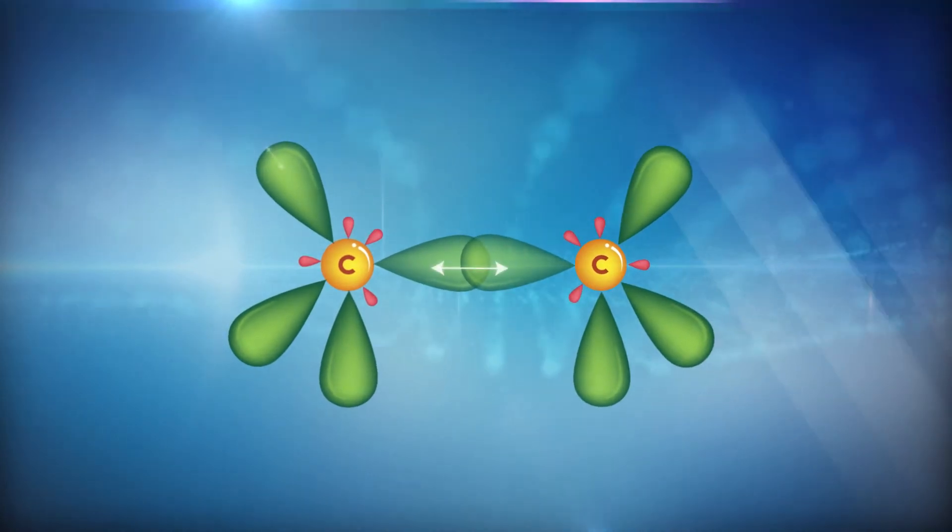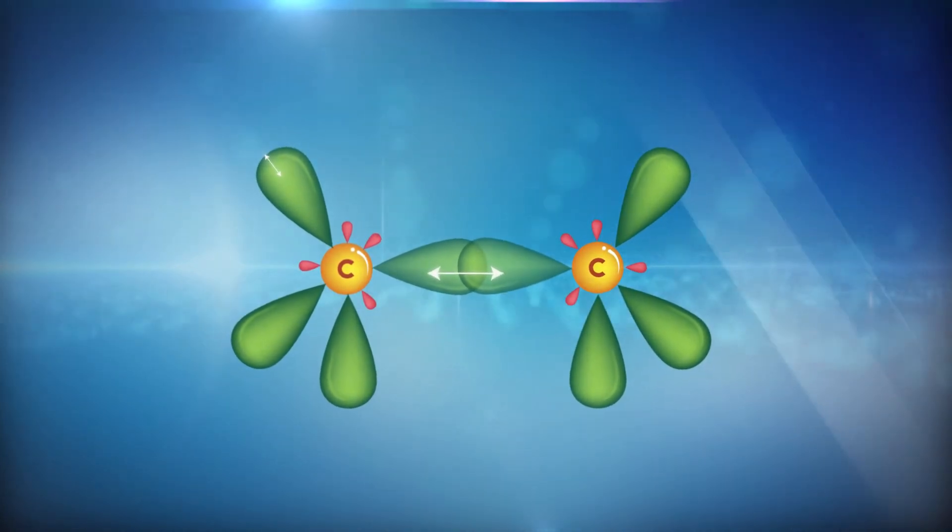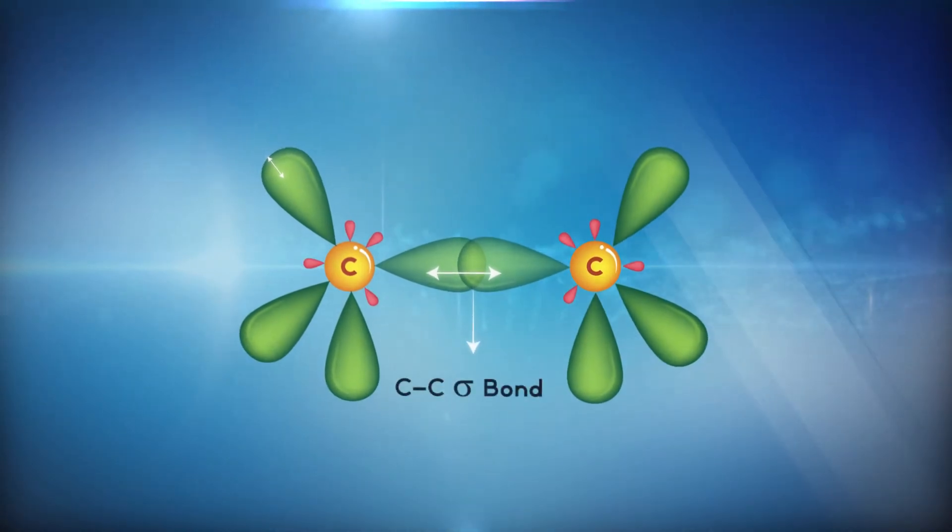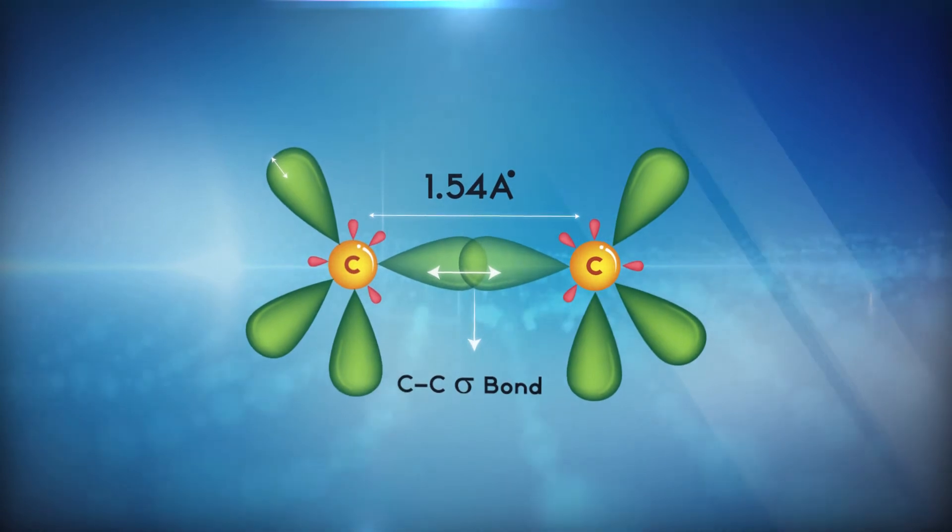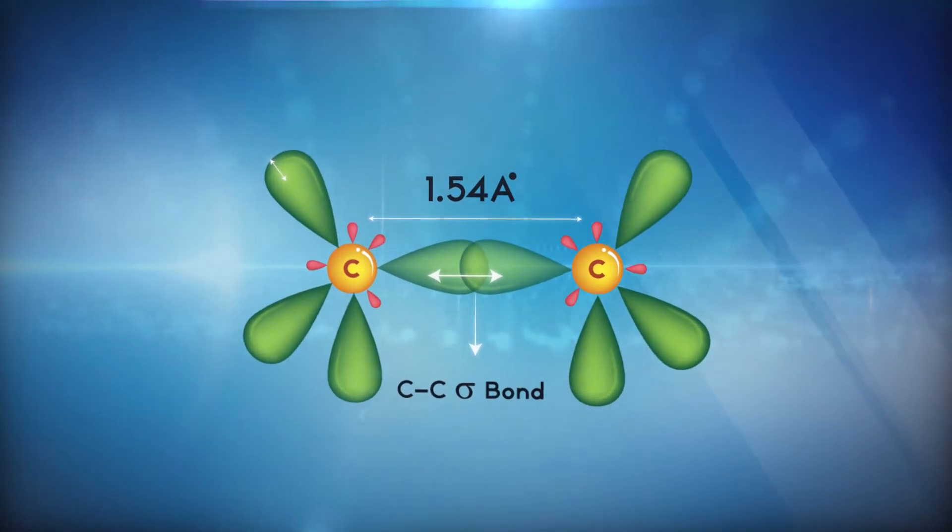When they join, they form a carbon-carbon sigma bond with bond length of 1.54 angstrom. The remaining hybrid orbitals form carbon-hydrogen sigma bonds with hydrogen atoms with bond length of 1.09 angstrom.